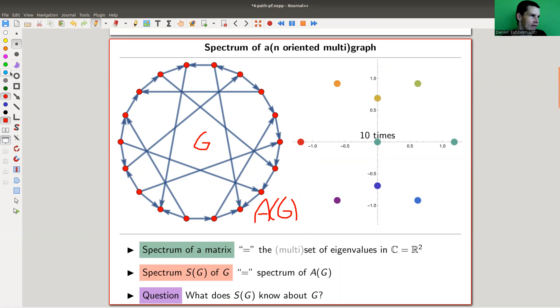The spectrum of a matrix as a reminder is just the multi-set of eigenvalues. And this multi-set, I just mean I remember the multiplicities as well. So here, this graph has, for example, 10 times the eigenvalue zero.